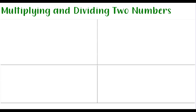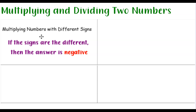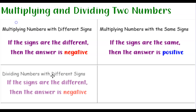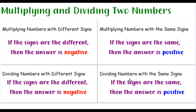When you're looking at problems that just involve two numbers, the rules are pretty simple. If you're multiplying numbers with different signs — one positive, one negative — the answer is always negative. If you're multiplying numbers with the same sign, the answer is always positive. The same rule applies when you divide: different signs give a negative answer, same signs give a positive answer.